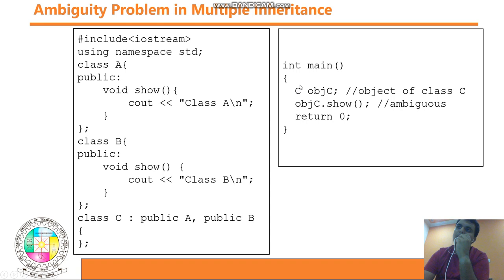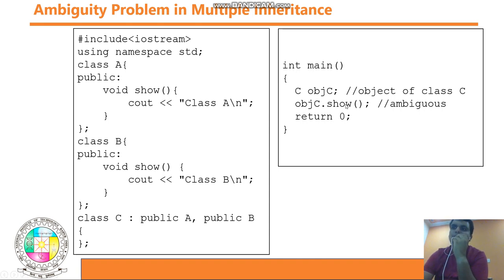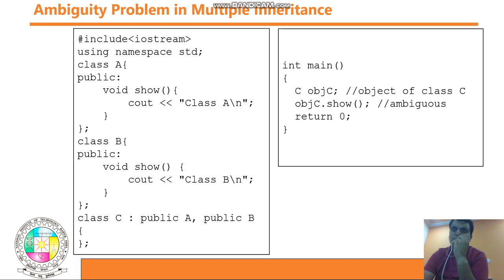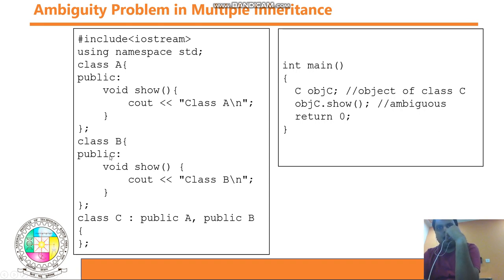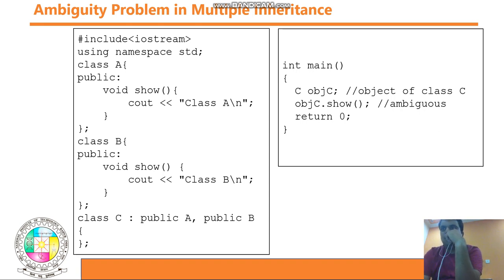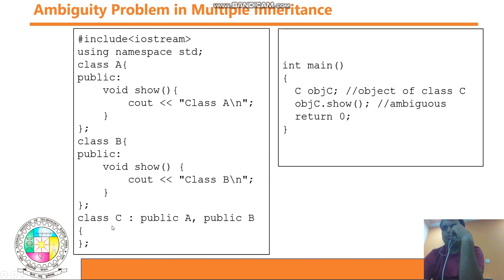Let's create a main function. I create object C of class C. As I mentioned, object C can call the 'show' method, but here is the confusion — which 'show' method will get called? That's why the ambiguity problem comes into the picture. Both the 'show' method from class B and the 'show' method from class A are accessible to object C, and the compiler gets confused which one to call.